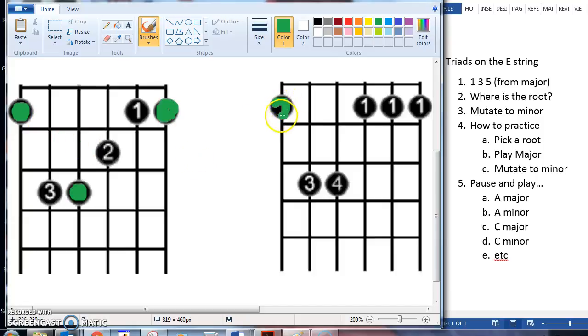When you convert to minor, it stays the same. The G is there, the G is here, the G is here. If this were the third fret right here, this is the third.